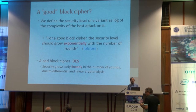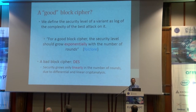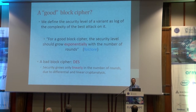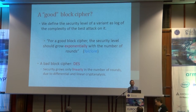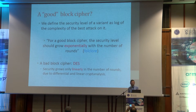What is a good block cipher? We define the security level of some reduced round variant as the log of the complexity of the best attack on it. So if the attack is 2-to-the-64, then the security level is 64. Some folklore says, informally, that for a good block cipher the security level should grow exponentially with the number of rounds. The motivation: a bad block cipher is DES, whose security grows only linearly with the number of rounds due to differential and linear analysis.